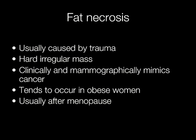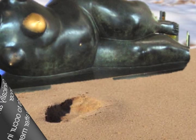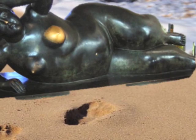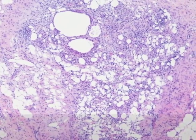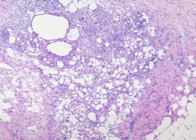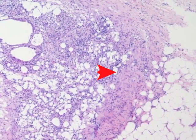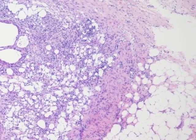Fat necrosis is usually caused by trauma. It creates a hard irregular mass and clinically and mammographically it mimics cancer. The condition tends to occur in obese women, usually after the menopause. This is the histological appearance of a case of fat necrosis — the central area of necrotic fat is surrounded by an area of fibrosis, and it is this that mimics carcinoma.